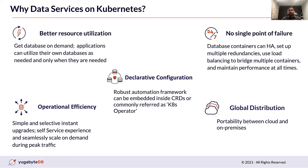It gives you better resource utilization. When databases are deployed as containers, they automatically become on-demand, as per the rest of the application. There is no need to maintain a monolithic database instance. Instead, applications can utilize their own databases as needed and only when they are needed. The next benefit is declarative config — you can use a declarative config to specify your database resources, and if the content of that file changes, Kubernetes can automatically reconfigure your database to match that config. This really allows easy scaling on demand during peak traffic.